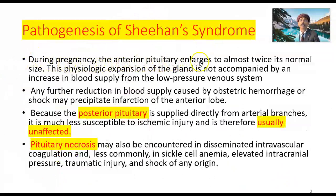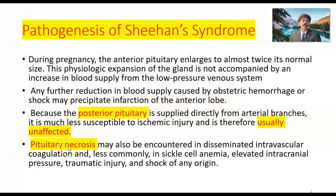Pathogenesis of Sheehan syndrome. During pregnancy, the anterior pituitary enlarges to almost twice its normal size. This physiologic expansion of the gland is not accompanied by an increase in blood supply from the low-pressure venous system. So the anterior pituitary gland is more vulnerable to necrosis. Any further reduction in blood supply caused by obstetric hemorrhage — mostly postpartum or intrapartum hemorrhage or shock — may precipitate infarction of the anterior lobe. Because the posterior pituitary is supplied directly from arterial branches, it is much less susceptible to ischemic injury and is therefore usually unaffected.